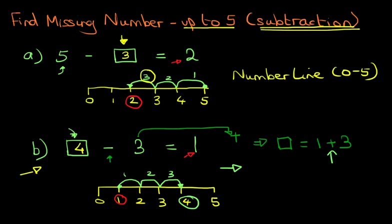So we can use the number line in both instances, but just be careful when you are going to the left and when you're going to the right. It all depends on where the missing number is. So that is how we find the missing number with numbers up to 5 for subtraction questions.